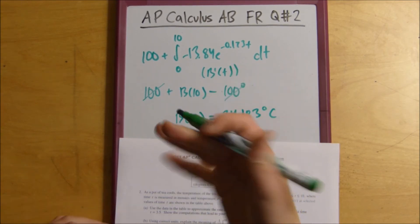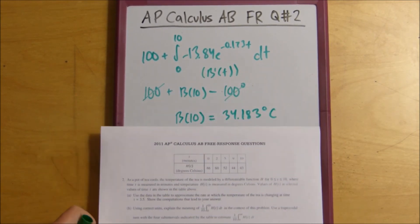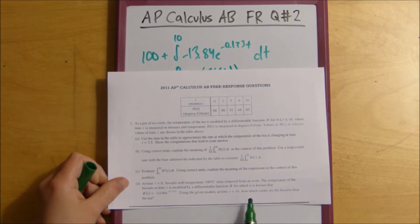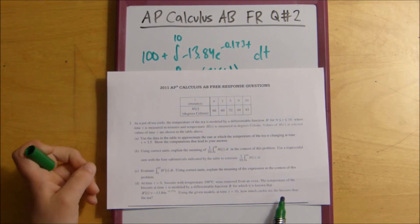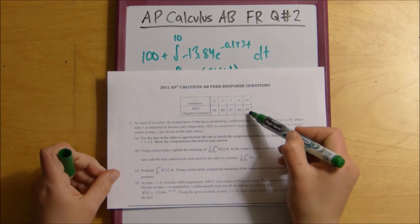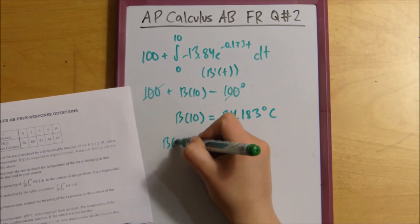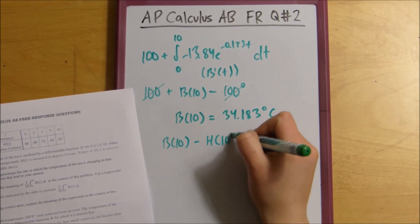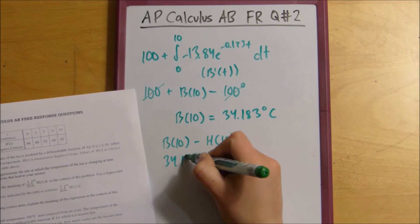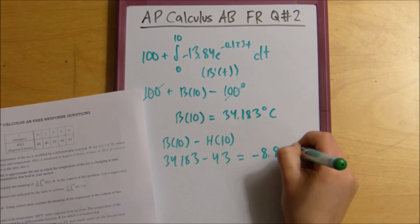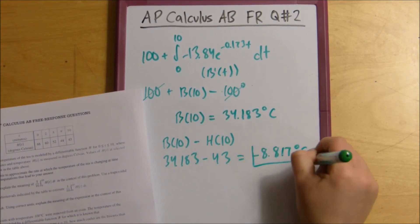So, we end up with b of 10 equals 34.183 degrees Celsius. But wait, we're not done with the question. It also asks us to compare this to the tea. How much cooler are these biscuits than the tea at time equals 10 minutes? So, we would say b of 10 minus h of 10, which is the same thing as 34.183 minus 43. And that ends up being negative 8.817 degrees Celsius.